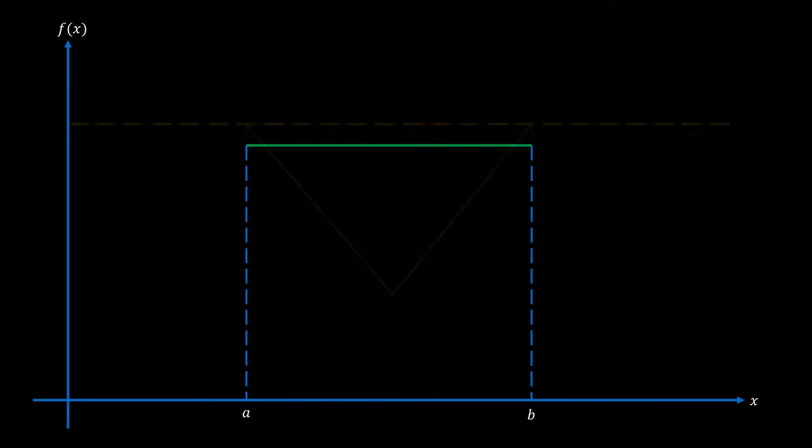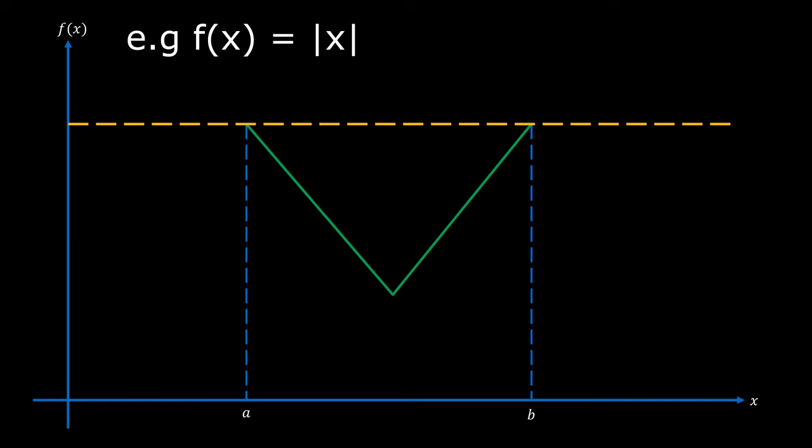An important note is that the function must be differentiable across the whole interval. If we had a function like this, where right at the lowest point of the graph there is a sudden change from increasing to decreasing, it means that at this point we are not able to differentiate the function, since there is no smooth transition from an increasing to decreasing function, and thus Rolle's theorem does not apply to a function such as this, because the function is not differentiable across the whole interval.